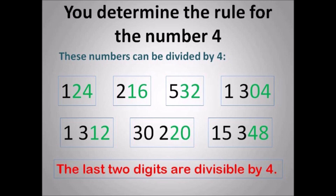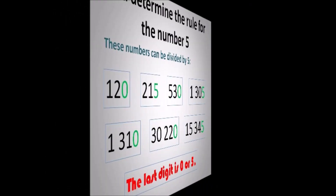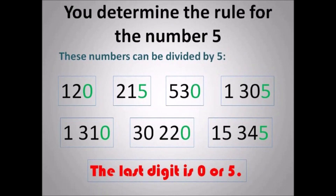Now look at 4. For 4, you look at the 2 back digits in the number, and if they're divisible by 4, then the number is divisible by 4. The last 2 digits are divisible by 4. So look at the last 2 digits and if they're divisible by 4, then it's divisible by 4.